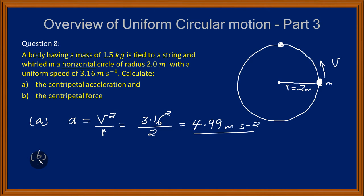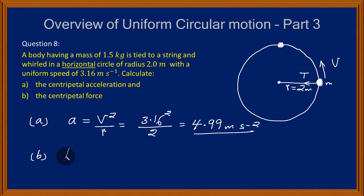Now let's look at part B - we want to calculate the centripetal force. I want to mention that this centripetal force is provided by the tension in the string. We show tension in a string using two arrows, but since I'm interested in the force acting on this mass, the string pulls it towards the center of the circular path. That tension must equal the centripetal force. The centripetal force is a resultant force - from Newton's second law of motion, the resultant force equals mass times acceleration, and both are vectors.